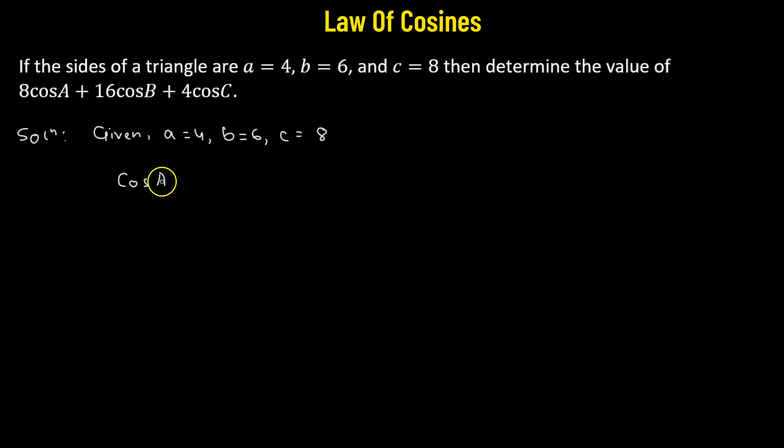Now the law of cosines states that cosine of angle A is given by b squared plus c squared minus a squared divided by 2bc. So we substitute the value of a, b, and c, and this is going to give us a value 7 over 8.